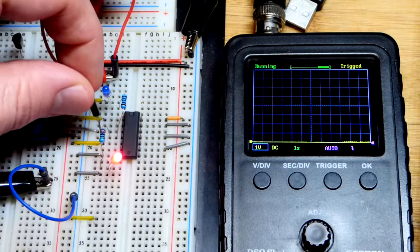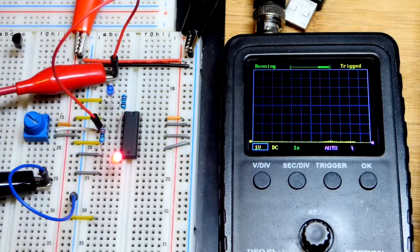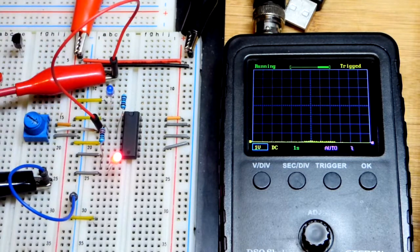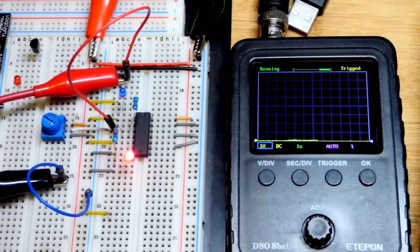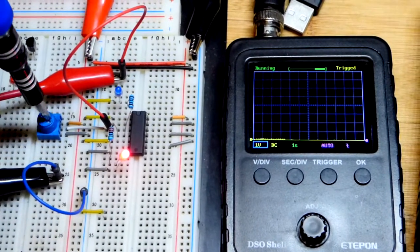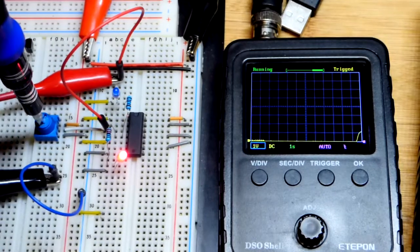I'm going to go to where that white jumper is for the trim pot. It's set all the way down to zero, we have zero volts, and the red LED is lit up. Now I'll turn the trim pot up.